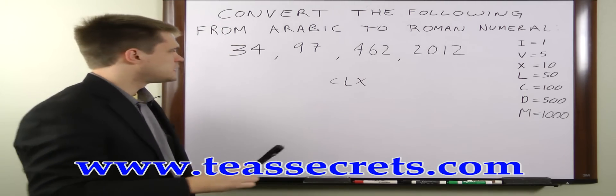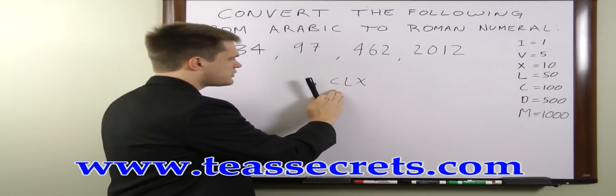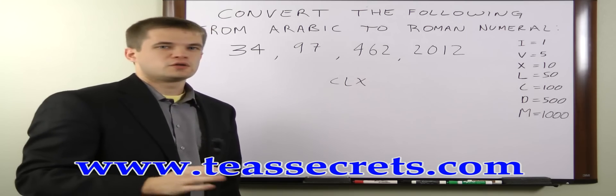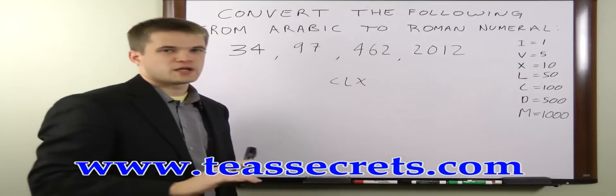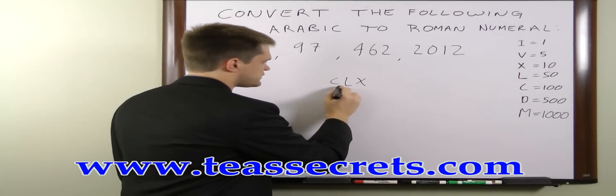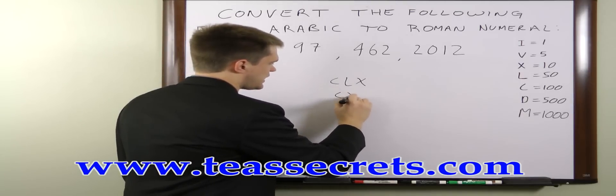The exception is that if you have a higher number and then a lower number and then a higher number again, you subtract the lower number from the higher number to get a single value that you then add. For instance, if instead of CLX, you have CXL,